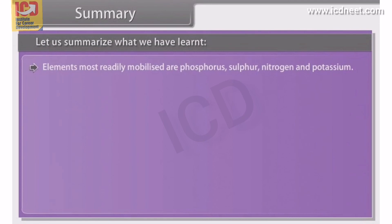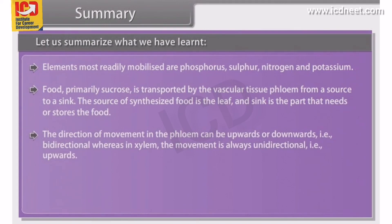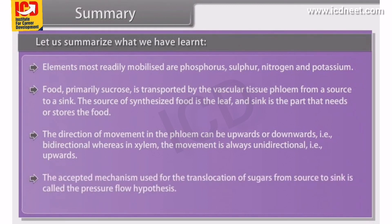Elements most readily mobilized are phosphorus, sulfur, nitrogen, and potassium. Food, primarily sucrose, is transported by the vascular tissue phloem from a source to a sink. The source of synthesized food is the leaf, and the sink is the part that needs or stores the food. The direction of movement in the phloem can be upwards or downwards, which is called bidirectional, whereas in the xylem the movement is always unidirectional. The accepted mechanism for the translocation of sugars from source to sink is called the pressure flow hypothesis.